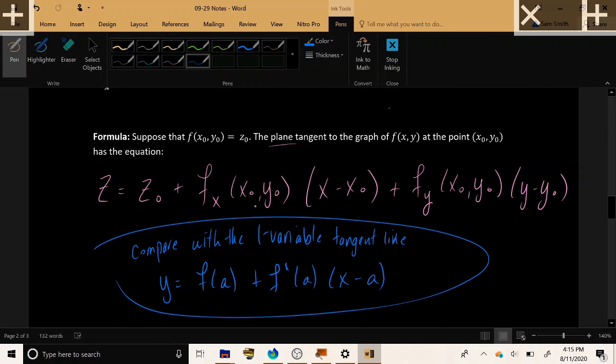Then we start to add terms to make sure that the slopes and the slants match up. In the one variable case, we only had that one derivative to think about, f prime, the derivative in the x direction, times x minus the given point.